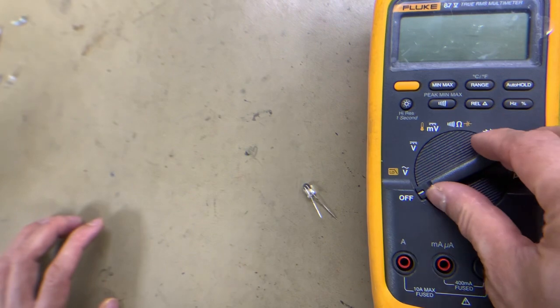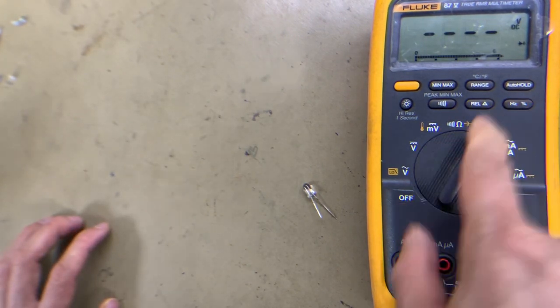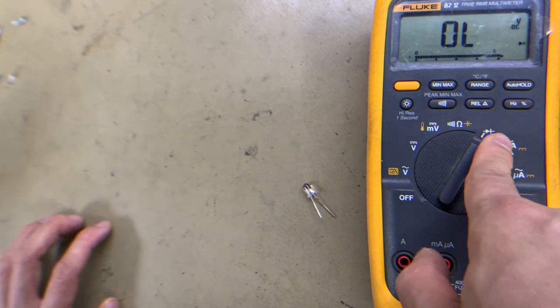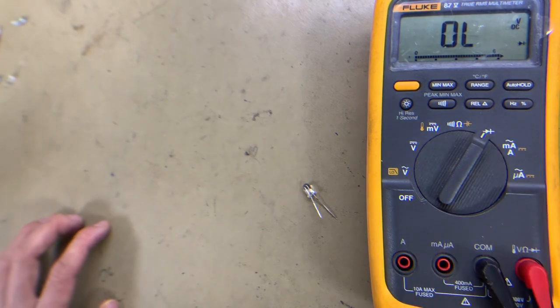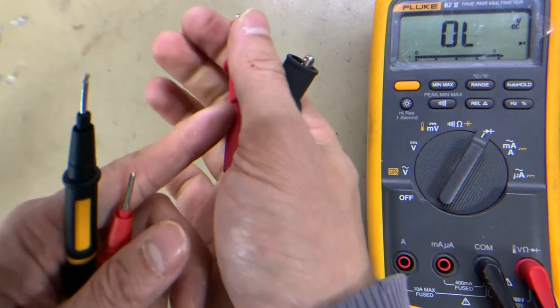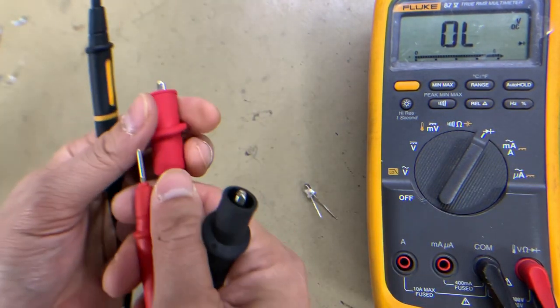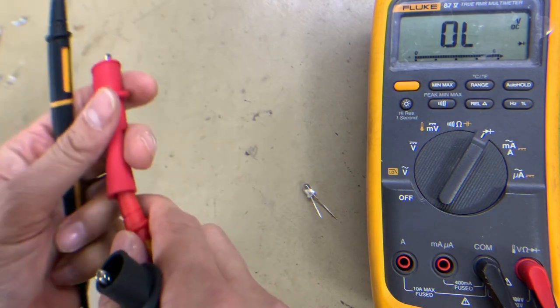Let's calibrate our digital tester to diode and transistor test mode, and then let's use this alligator clip to hold the light-emitting diode.